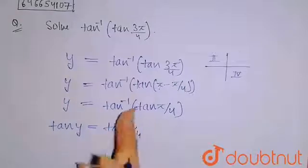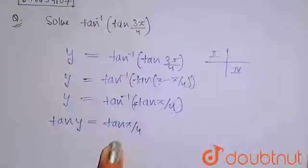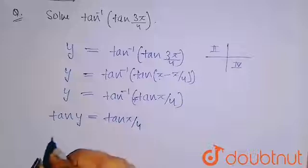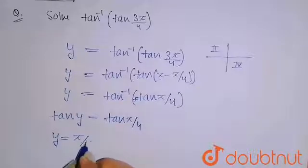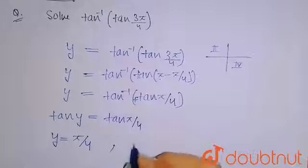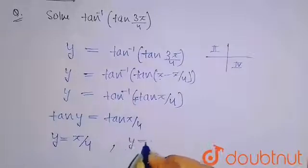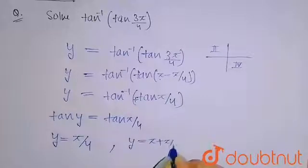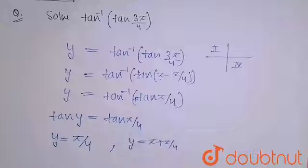Or we can say that y equals π plus π by 4, because it is a positive value. It is a positive value, which means we can write it in the third quadrant.